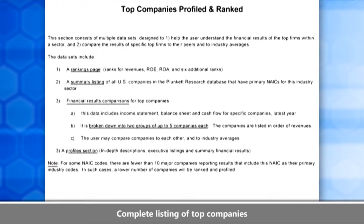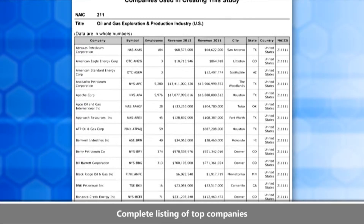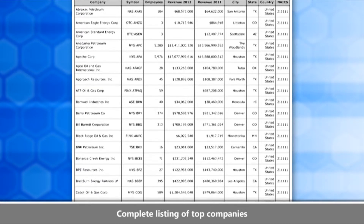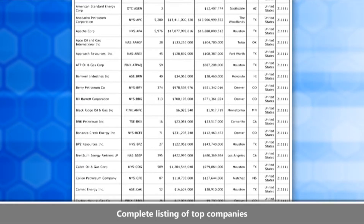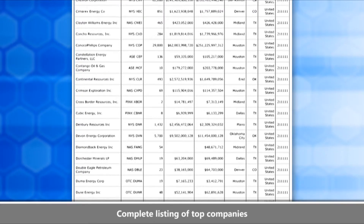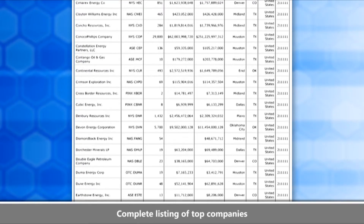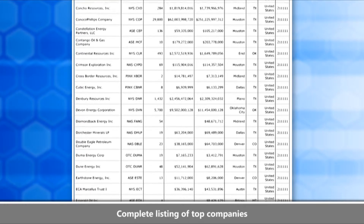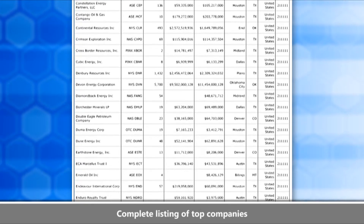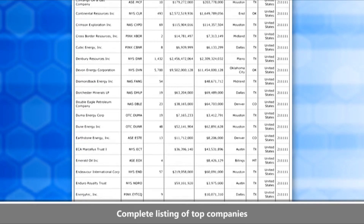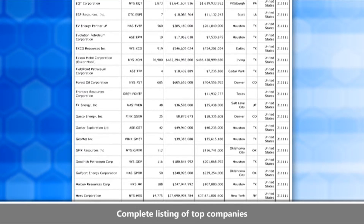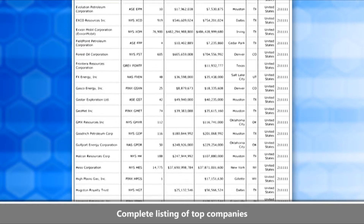We also give you a comprehensive listing of every company within our vast databases that is specific to this sector — both public and private companies. That includes a ticker symbol, or if it's private, a subsidiary, or a joint venture, we'll let you know. It includes city and state, revenues, and a lot of vital data in one extensive, really useful list.